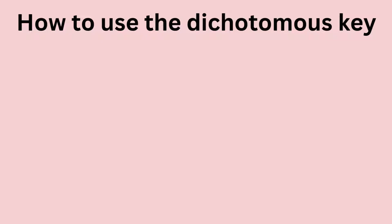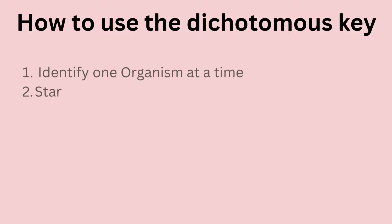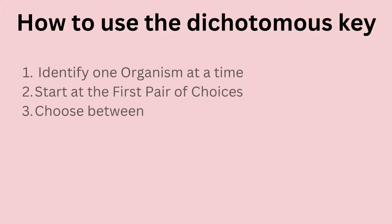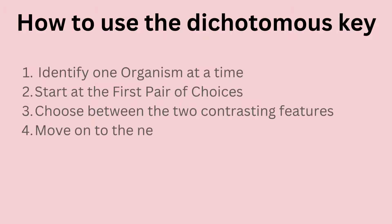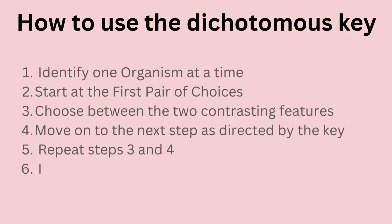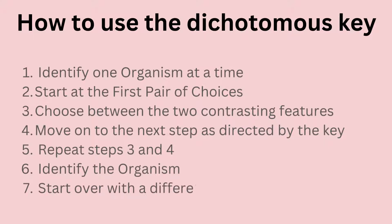Using a dichotomous key involves a systematic process of elimination based on observable characteristics. Here are seven easy steps: Step one, identify one organism at a time. Step two, start at the first pair of choices. Step three, choose between the two contrasting features. Step four, move on to the next step as directed by the key. Step five, repeat steps three and four. Step six, identify the organism. Step seven, start over with a different organism.